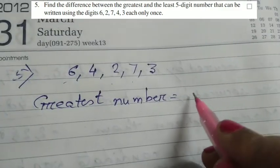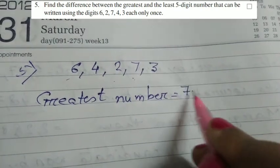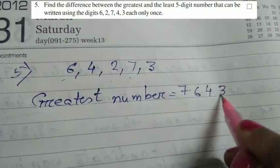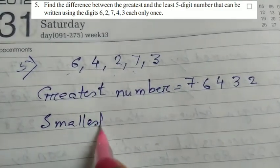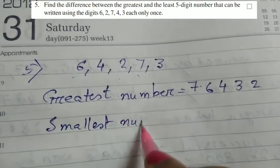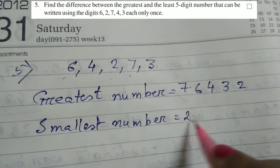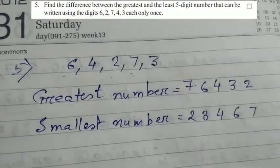Greatest number is equal to the highest number 7, then 6, 4, 3, 2. And the smallest number is equal to in opposite side, I will write 2, 3, 4, 6, 7.